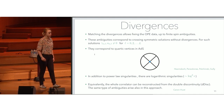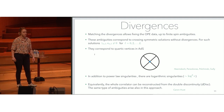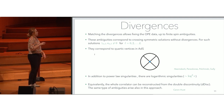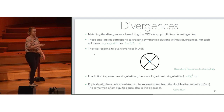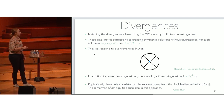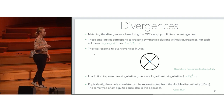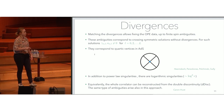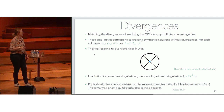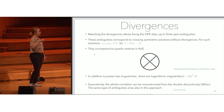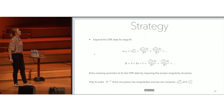These ambiguities correspond to crossing-symmetric solutions which don't have any divergence, and for such solutions the anomalous dimension and the triple OPE coupling are always zero for spin large enough — they are nonzero only for finitely many spins. This kind of solution corresponds to quartic vertices in AdS. In addition to power-law singularities, there are also logarithmic singularities, which will appear later in the talk. The whole correlator can be reconstructed from these singularities — or equivalently from the double discontinuity of the correlator — and again the same ambiguities are present.